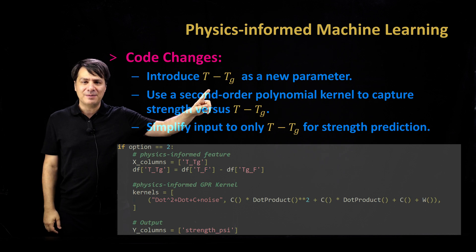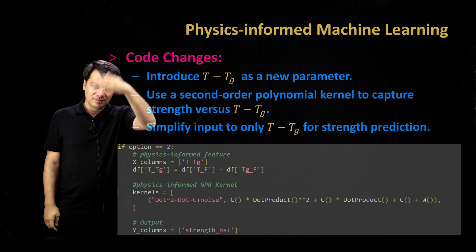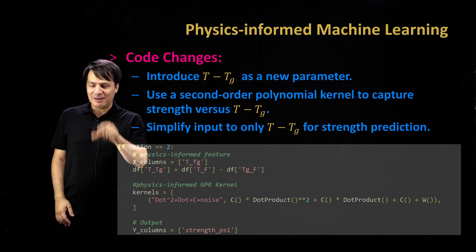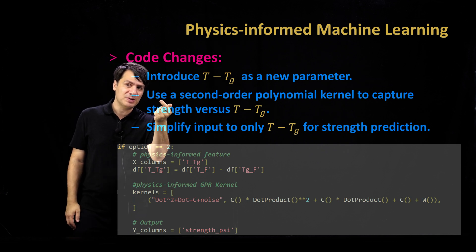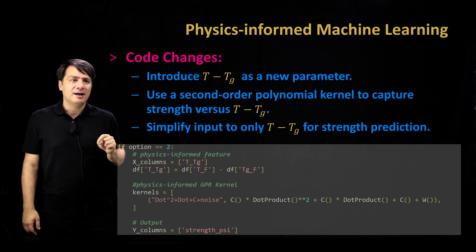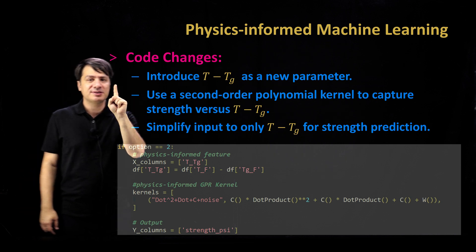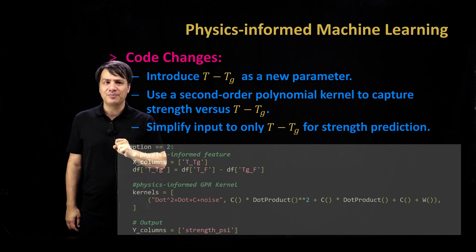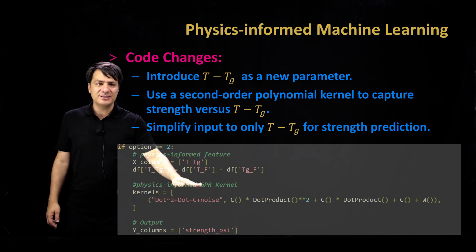So this is what we do in this step. First, we introduce a new parameter, T minus Tg. For every column, we have a Tg value, so we create T minus Tg. And we know when it's negative, it means that the strength is high. When it's positive, it means that the strength is low. So instead of T and relative humidity, we're going to use a single parameter for strength prediction, and that's T minus Tg. Not only that...